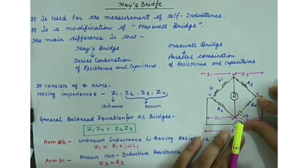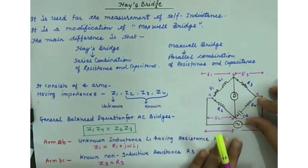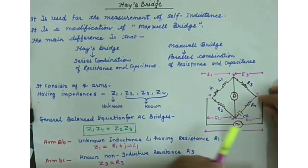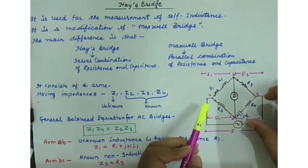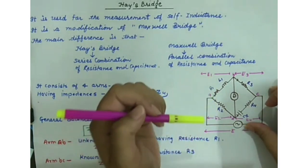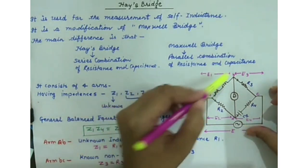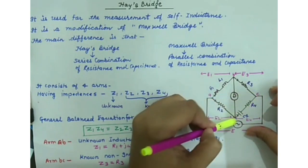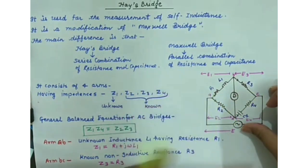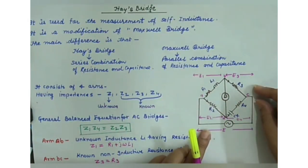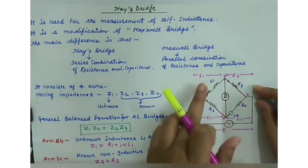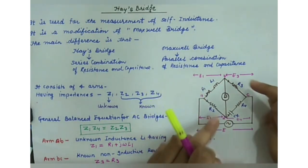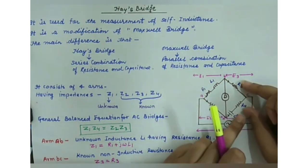As we know, every bridge consists of four arms. Similarly, Hay's Bridge also consists of four arms: AB, BC, CD, and DA. Each arm consists of impedances Z1, Z2, Z3, and Z4.